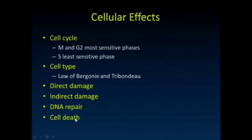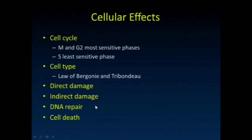There are a number of different ways that damage can happen. An x-ray could directly damage DNA by interacting with an atom or molecule right within a strand of DNA. But more commonly, the damage is indirect — we talked about the production of hydroxyl radicals, and a lot of the damage is mediated through that.